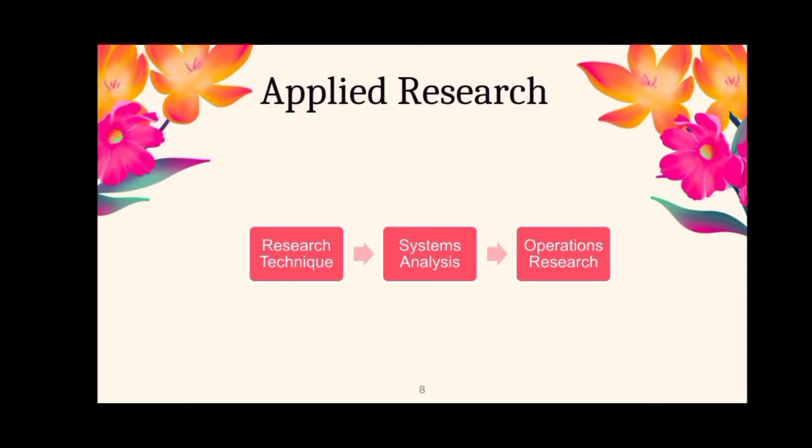The second major type of research is usually known as applied research. Applied research encompasses a variety of specific problems research techniques, such as system analysis and operation research. Applied research is a type of research that aims at finding solution to present problems that society, organization, and the like are facing by employing well-known choice and principles.